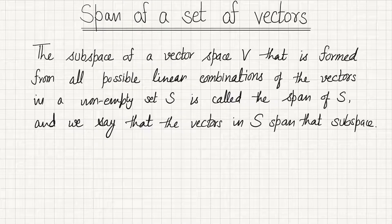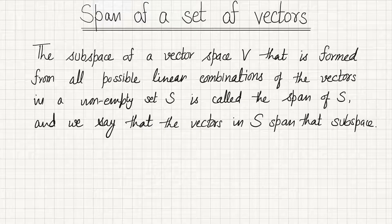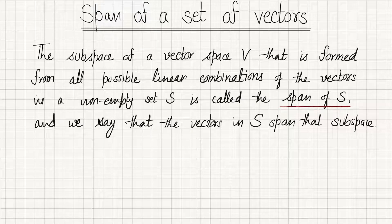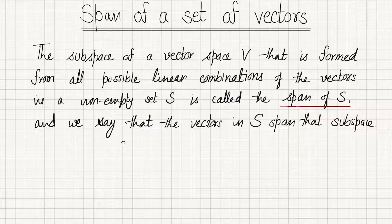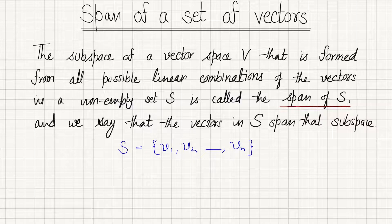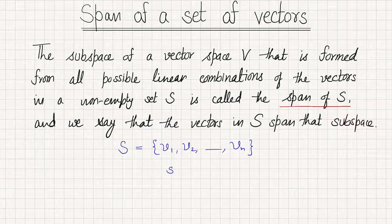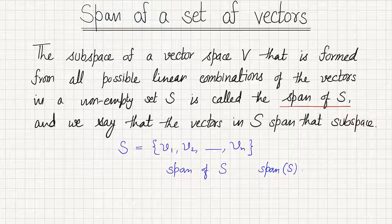The subspace of a vector space V which is formed from all possible linear combinations of the vectors in a non-empty set S is called the span of the set S. So if we take a set S with elements v1, v2, ..., vn and take all possible linear combinations, that subspace is called the span of S.